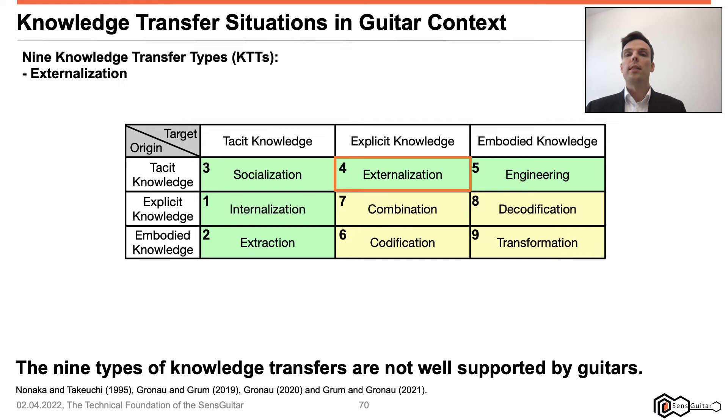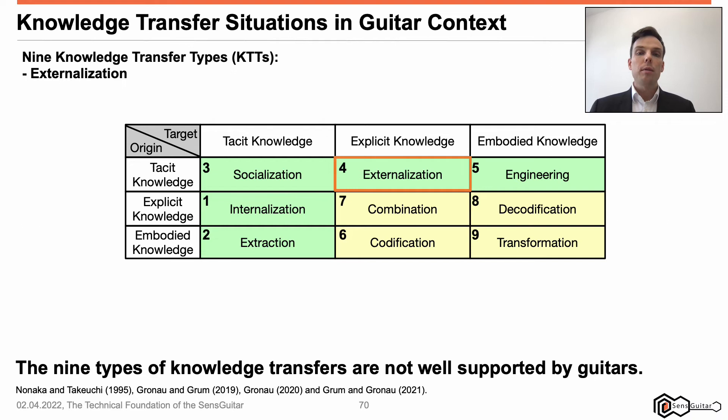Externalization: knowledge carrier-bound tacit knowledge (origin) is explicated so that the knowledge carrier-unbound explicit form of knowledge is created (target). This can be transmitted easily. For instance, when a person writes a book, their tacit knowledge is made explicit so that the book can be easily passed among people. Since traditional guitars do not support the creation of musical sheets, the notation of scales and chords, etc., externalizations are not supported by guitars yet.